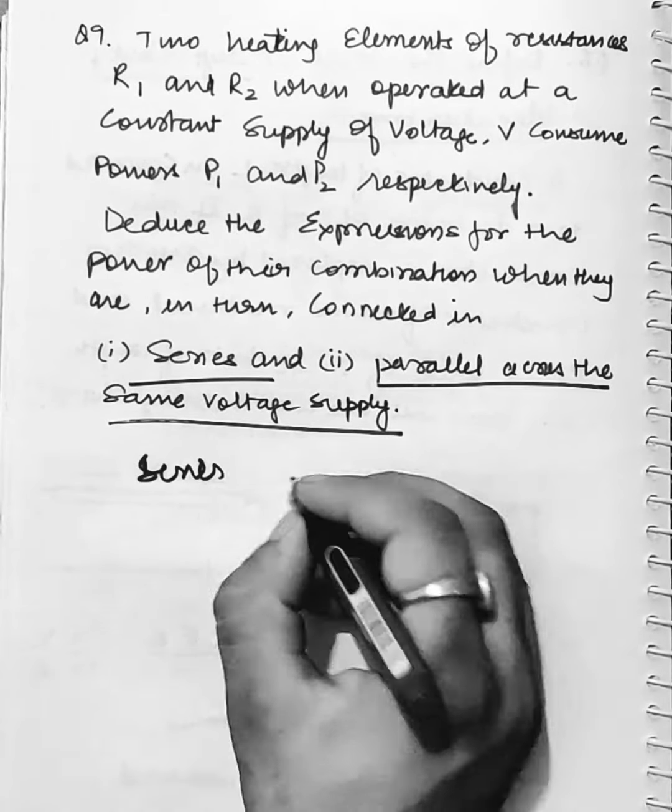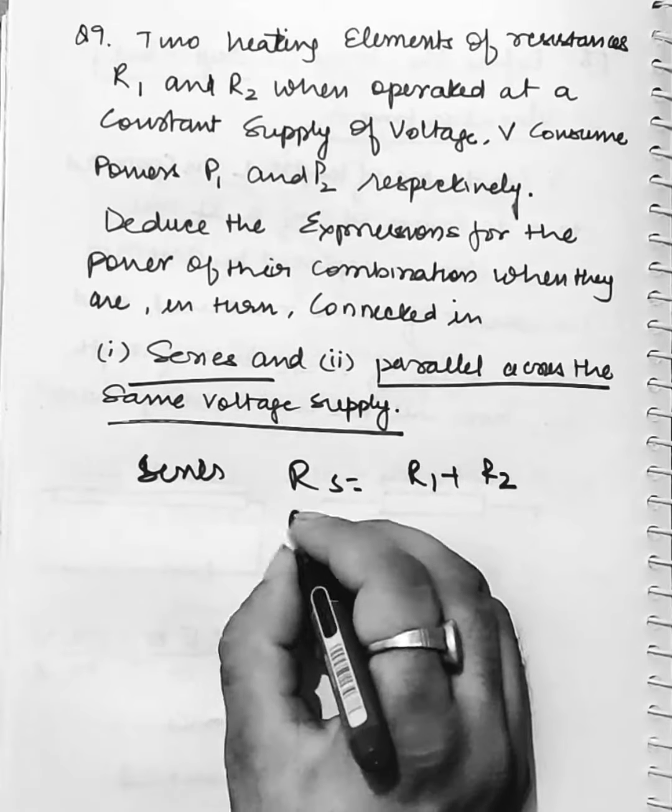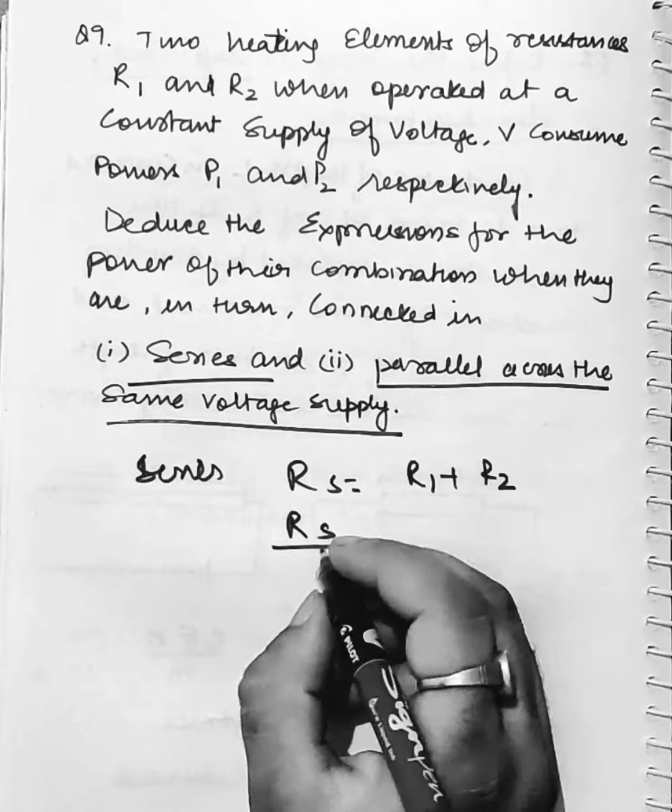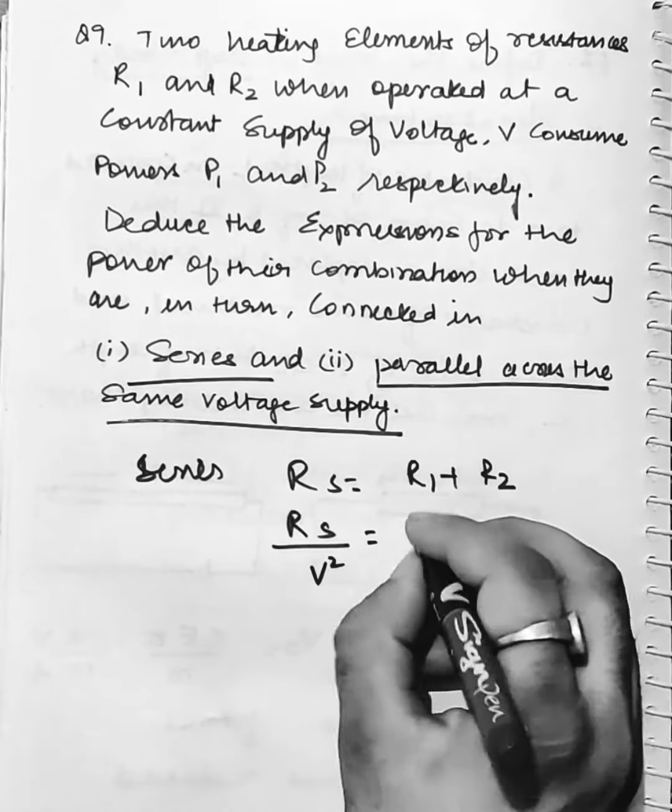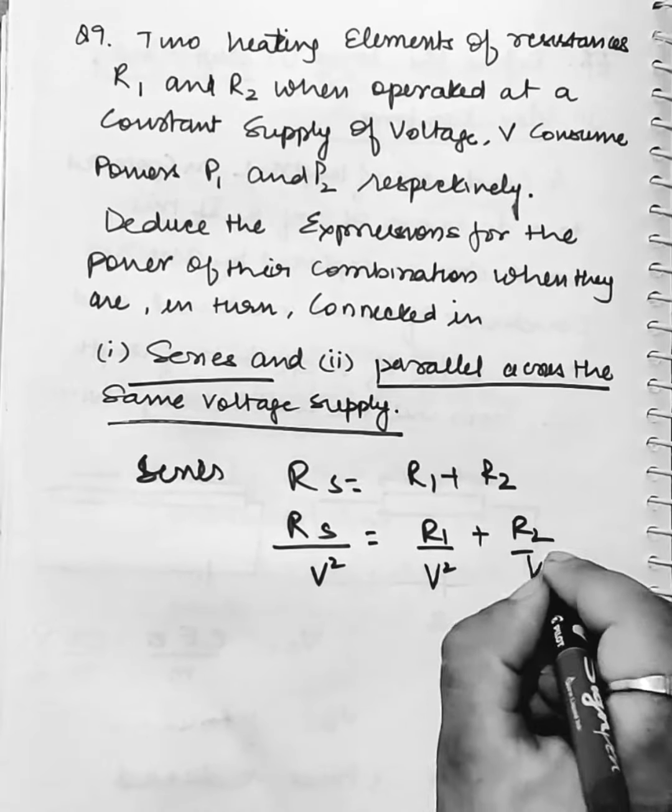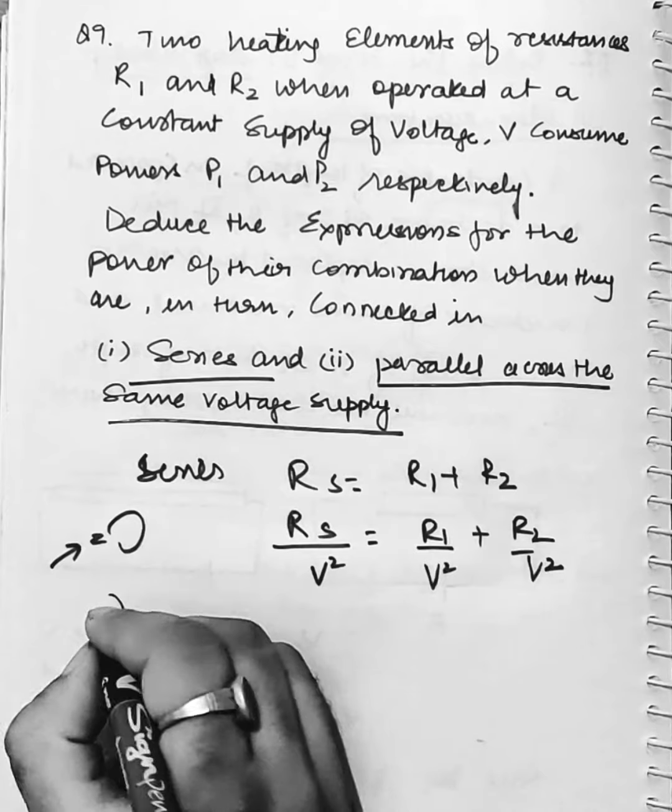If we talk about series, what happens in series? Rs equals R1 plus R2. Both sides are divided by V squared because we have the same power source on both sides, the same voltage source on both sides.